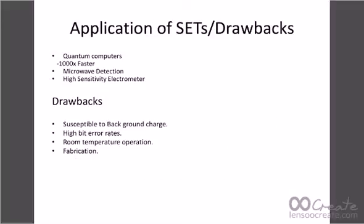Applications of SET: SET can be used in quantum computers, in microwave detection, and as a high-sensitivity electrometer. It can also be used to set up a high degree of programmability with low device cost. If the source-drain voltage to a single electron transistor is slightly over the Coulomb blockade threshold, the source-drain current through the device is extremely sensitive to the gate voltage. In microwave detection, microwave has low frequency and therefore low energy, so detection would not have been possible without SET.